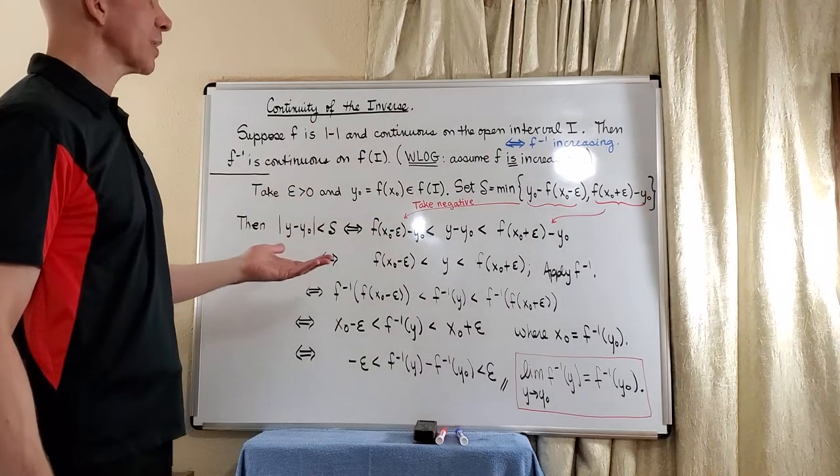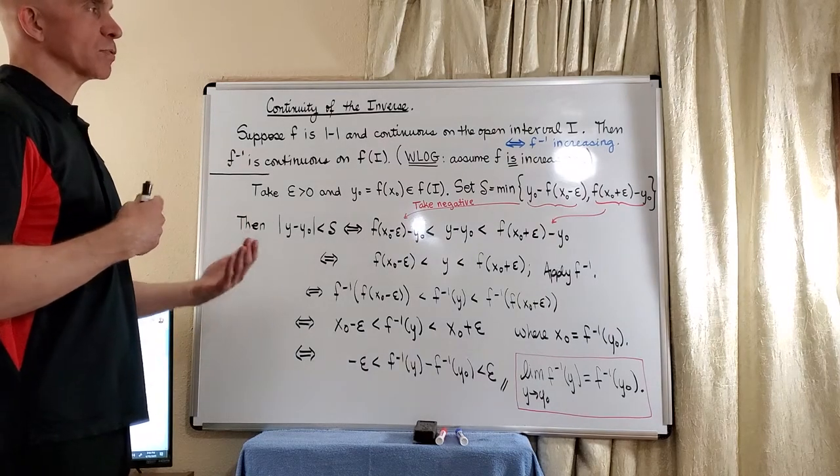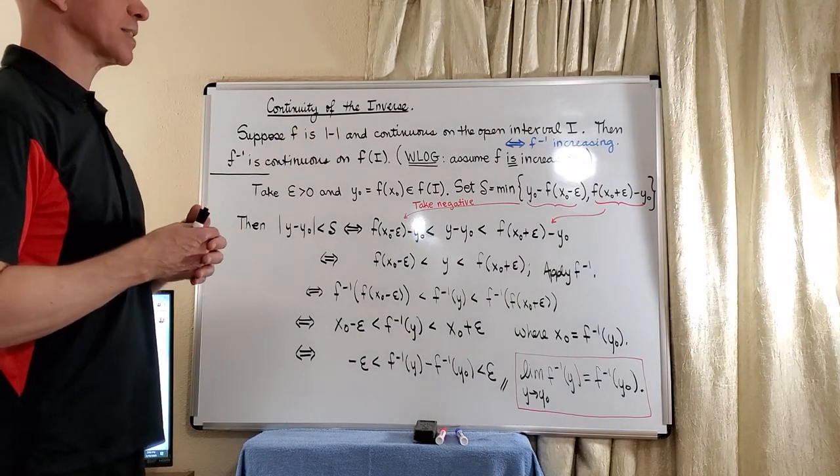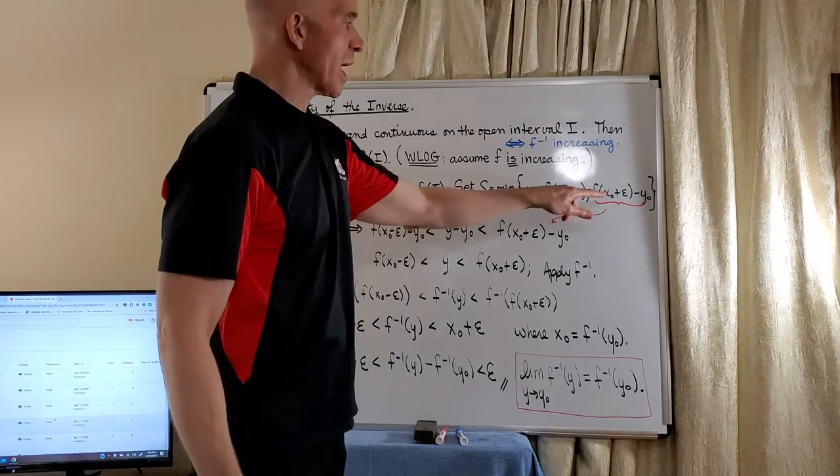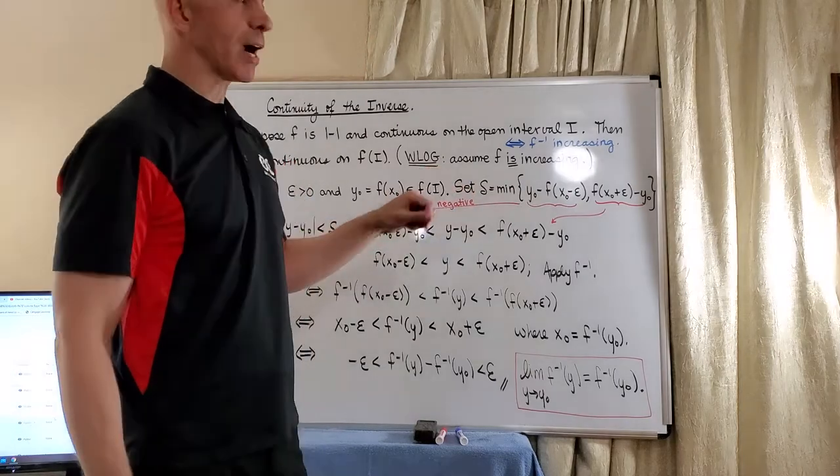The idea here is to set up some arithmetic that appeals to the fact that we've assumed f is increasing. So we're going to write two positive numbers here and take the minimum to be our delta.